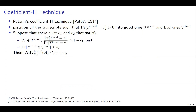We use Patarin's coefficient H technique and its refinements by Chen and Steinberger in our security proof. We partition all transcripts with non-zero probability in the ideal world into good and bad transcripts, then compute ε_1 from the ratio of interpolation probabilities for good transcripts and ε_2 from the upper bound on the probability of having bad transcripts in the ideal world.